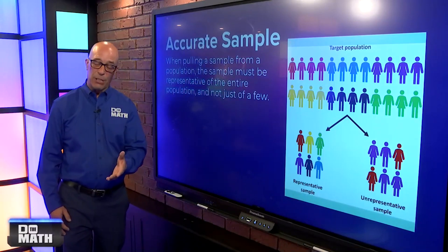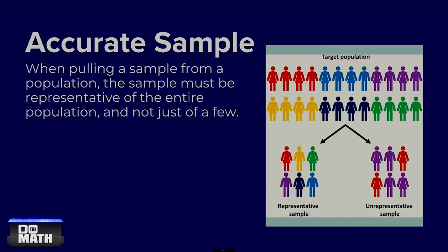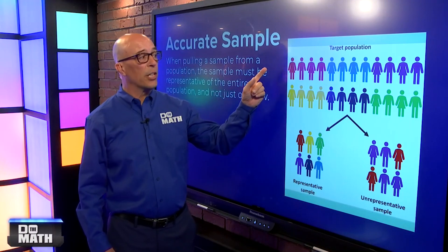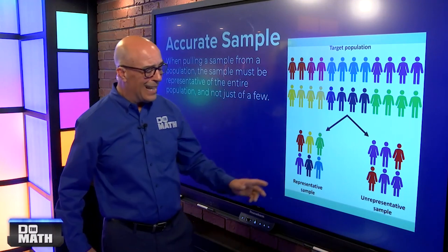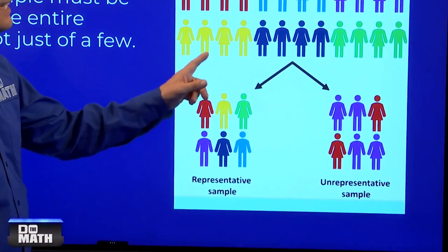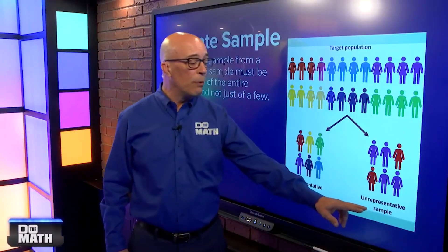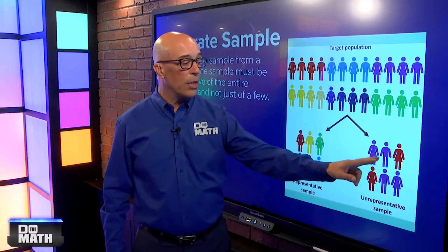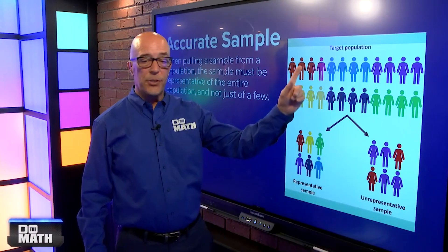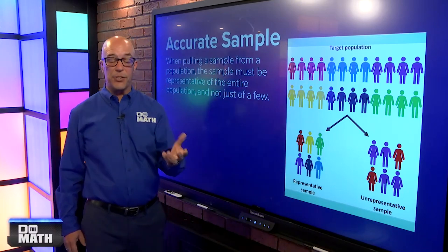So, we need to have an accurate sample. So, that's the next thing. When pulling the sample from a population, the sample must be representative of the entire population, not just a few. So, this way, we can see the target population. A representative sample shows people from each different parts of the population, where an unrepresentative sample is showing only two different parts of the entire population. So, you want to get an accurate sample the best you can.